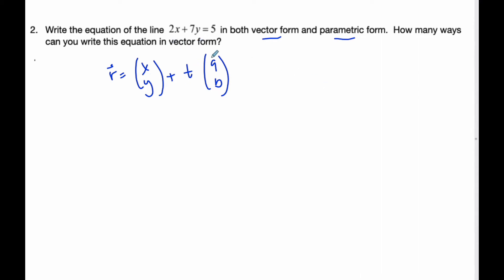Well, the direction vector and the slope are going to be related. And so if I think about taking this equation, rearranging it for y equals x plus b, I get 7y is equal to negative 2x plus 5, dividing by 7, I get negative 2 over 7x plus 5 over 7.